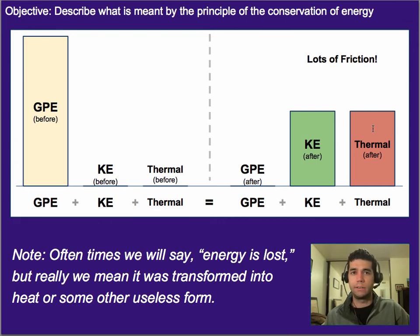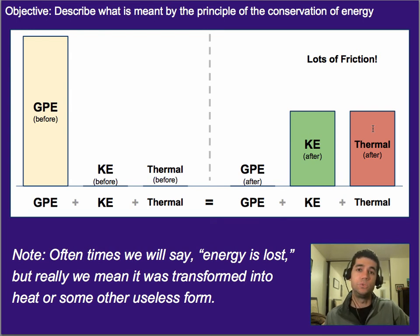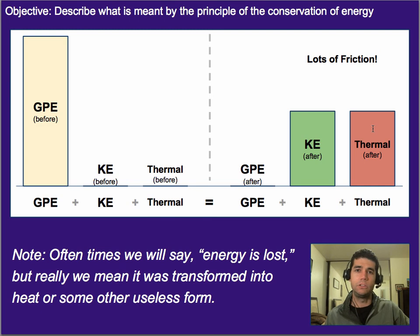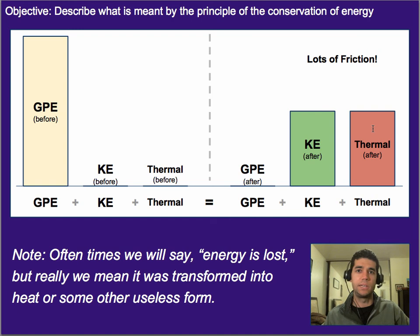Last note: oftentimes we'll say energy is lost, but what we actually mean is that it's been transformed into a less useful form. It didn't actually disappear — it's not gone forever. It's kind of like a penny that fell out of your pocket: it still exists, you just may not be looking in the right place for it, which would be under the couch instead of in your pocket. When we say energy is lost in physics, we mean it just turned into a less useful form we're not accounting for — but it still exists somewhere.